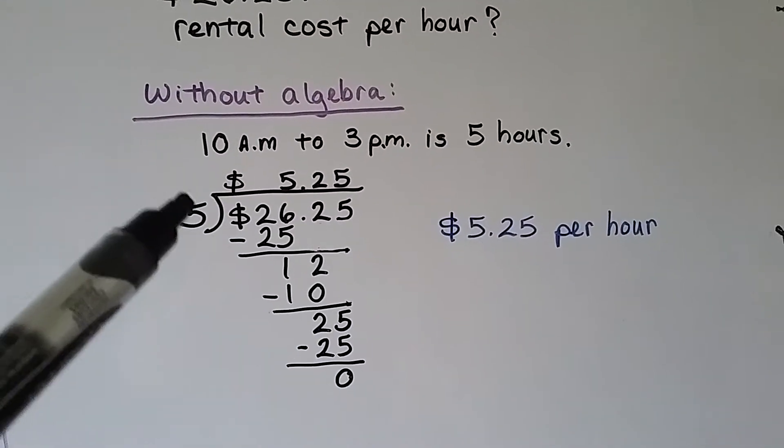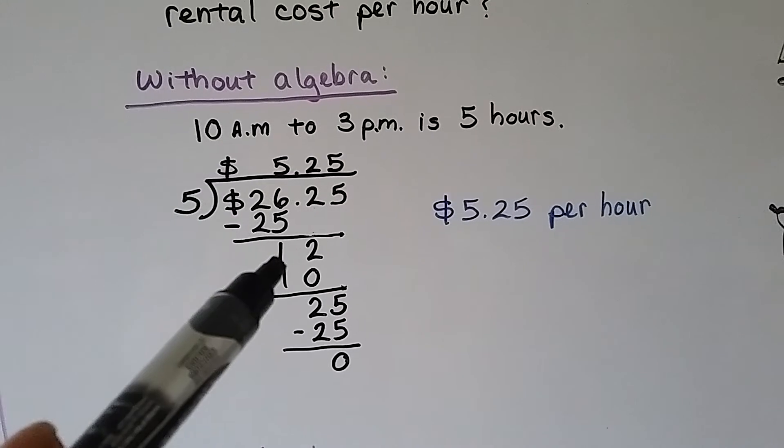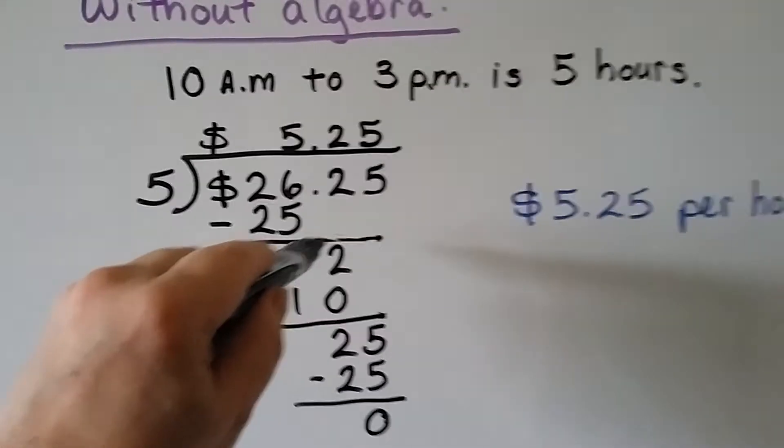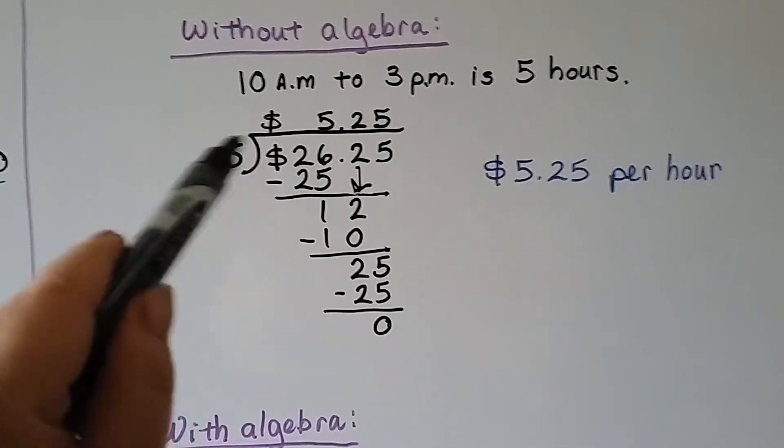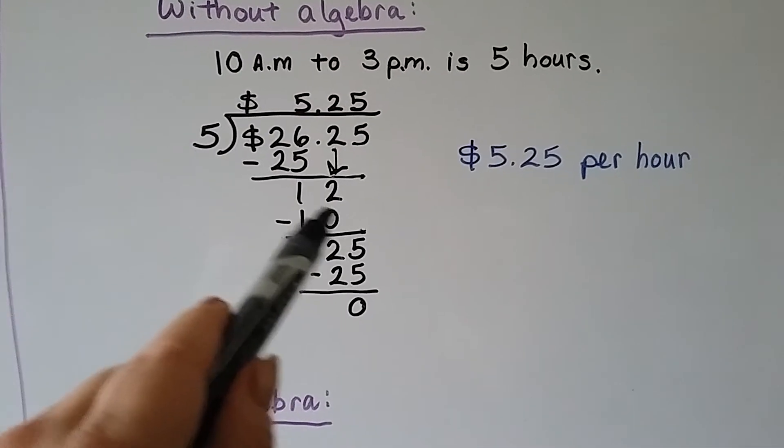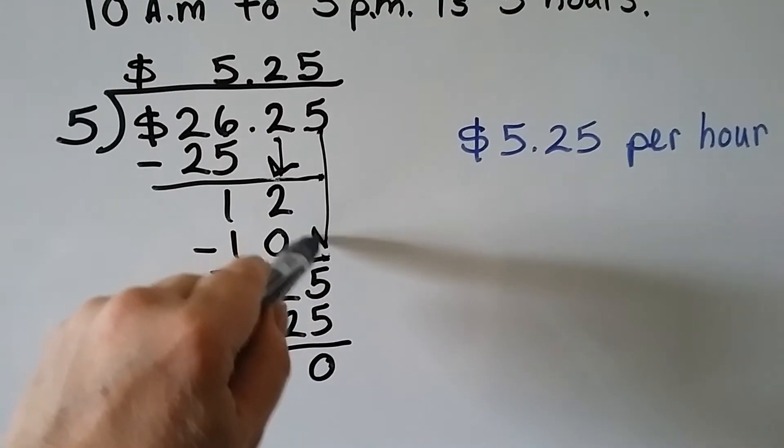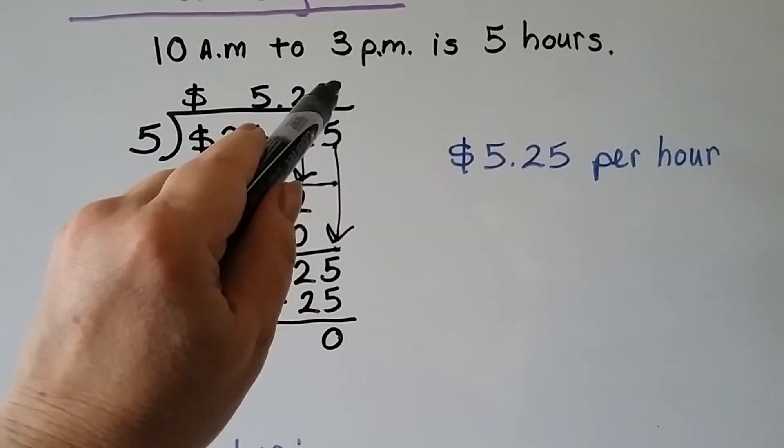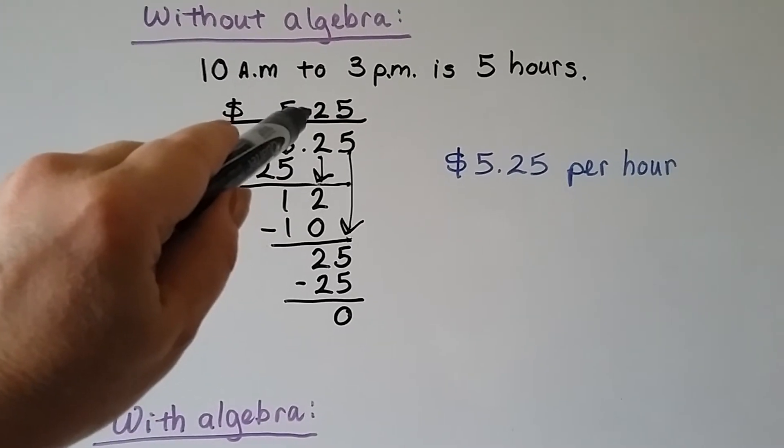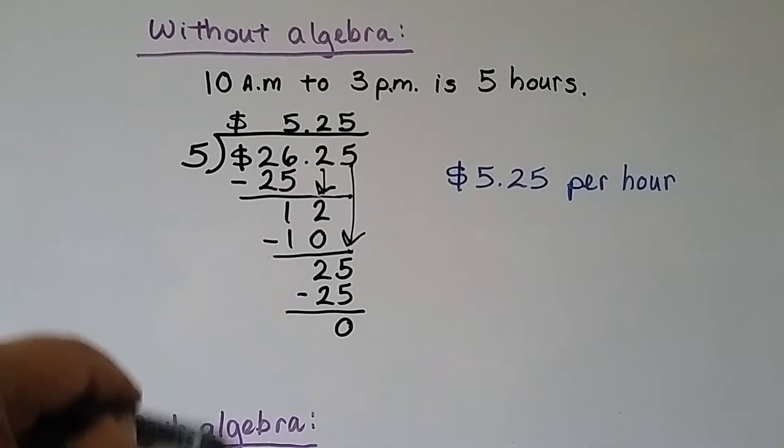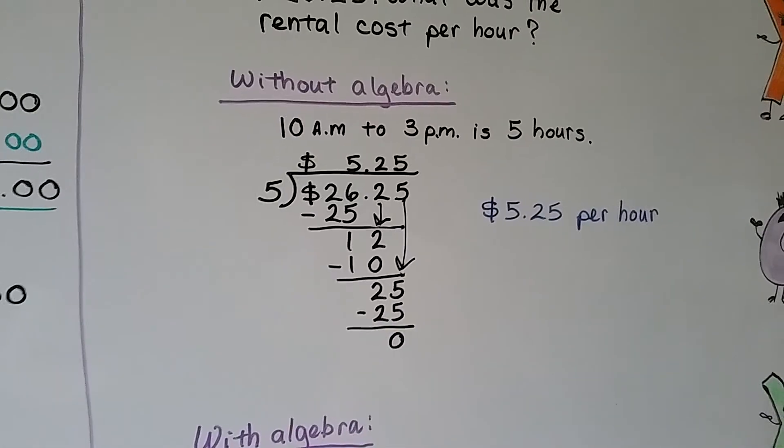We do our long division. 5 goes into 26. Well, 5 times 5 is 25. That's close. We subtract it. We get a 1. Now it's the 2's turn to come down. 5 goes into 12. Well, 5 times 2 is 10. That's close. We subtract the 10 and we get a 2. Now it's this 5's turn to come down. 5 goes into 25 five times. We get a zero remainder. We have our decimal point straight up into the quotient. We know we're dealing with money. We're trying to find a cost per hour, and it's $5.25 per hour.